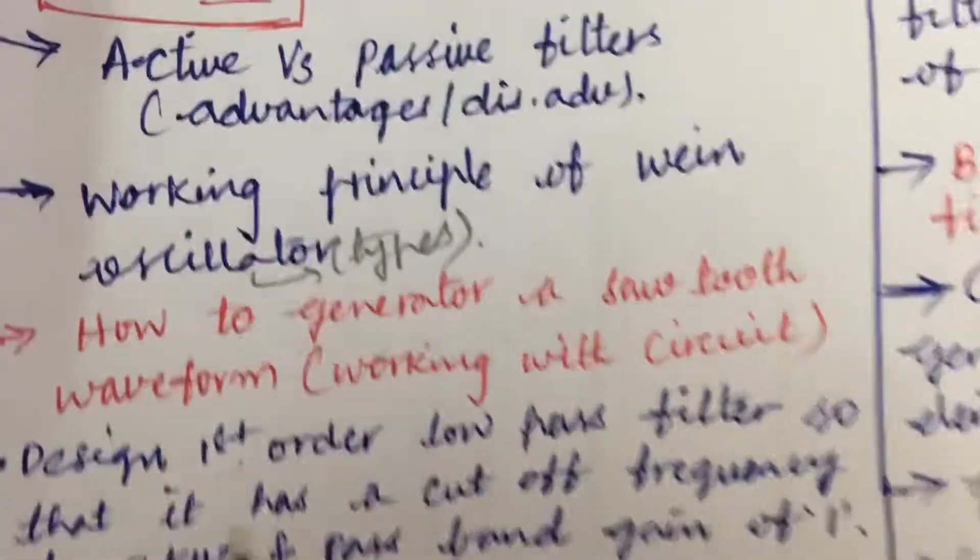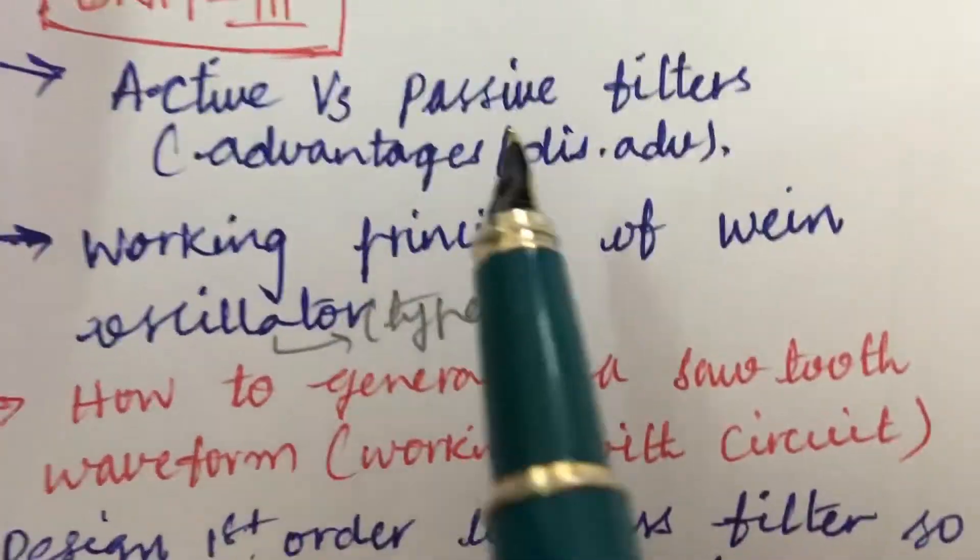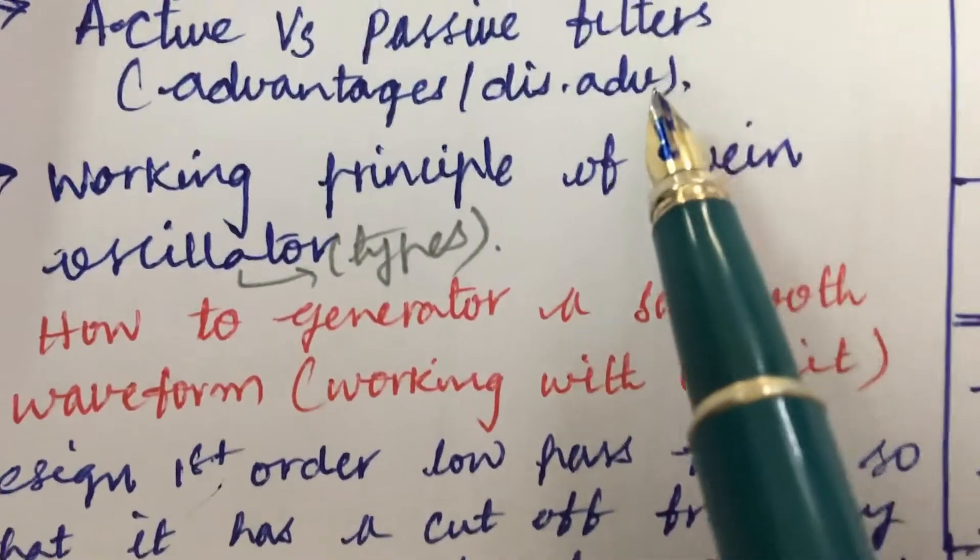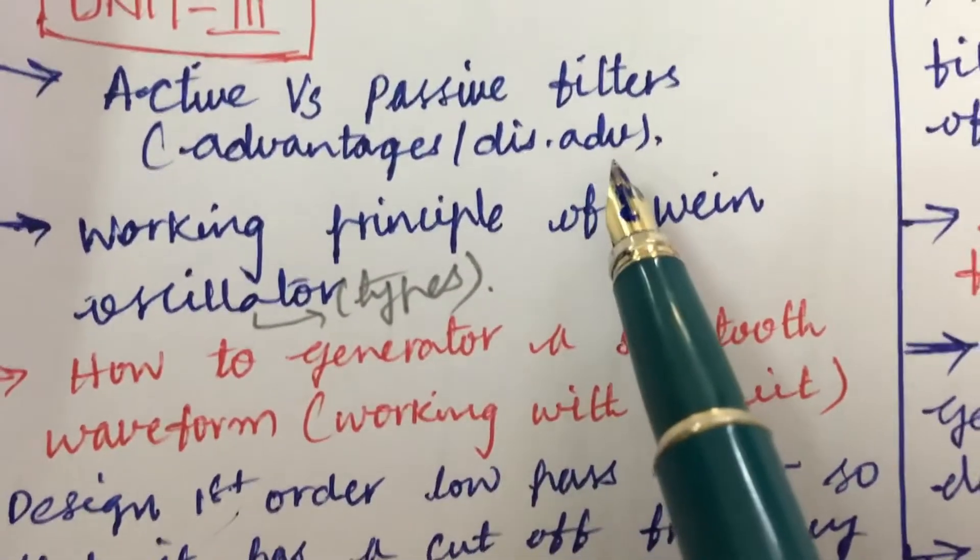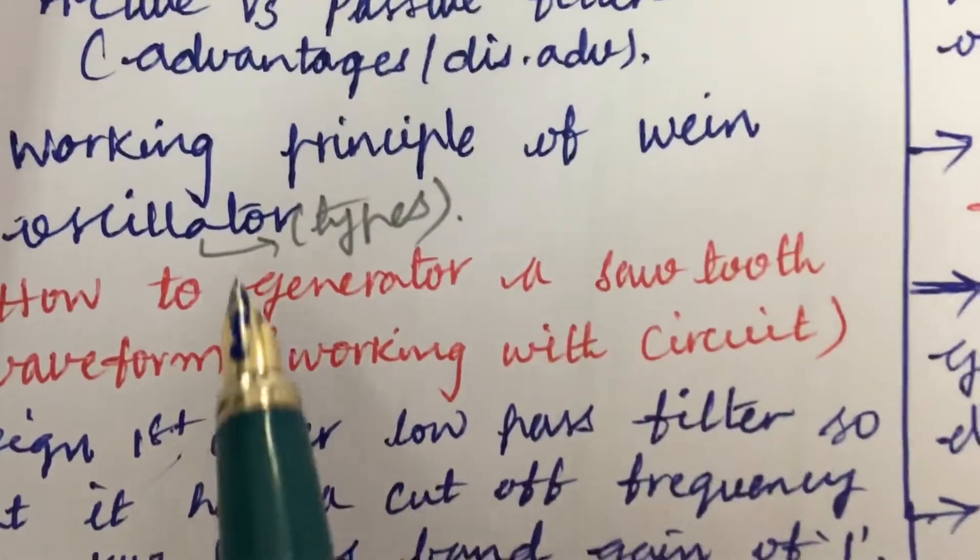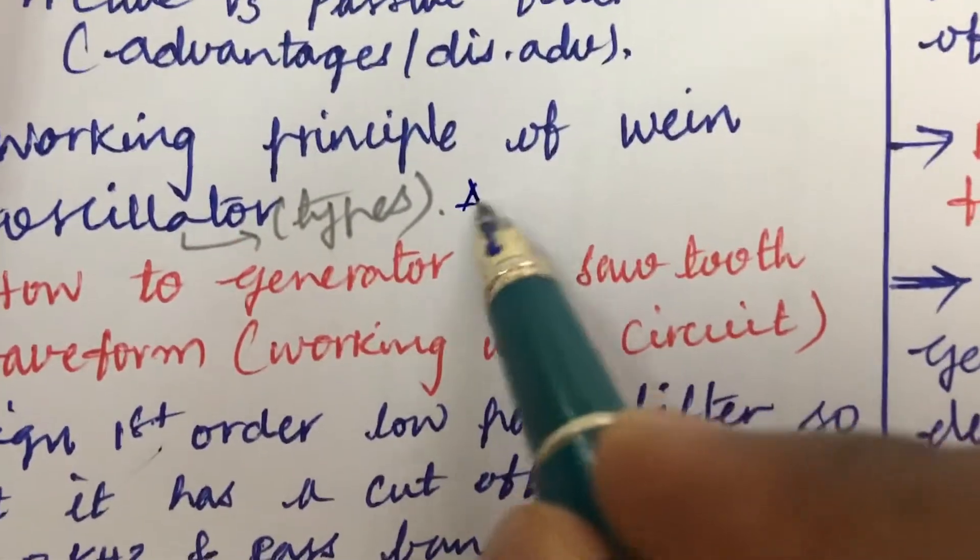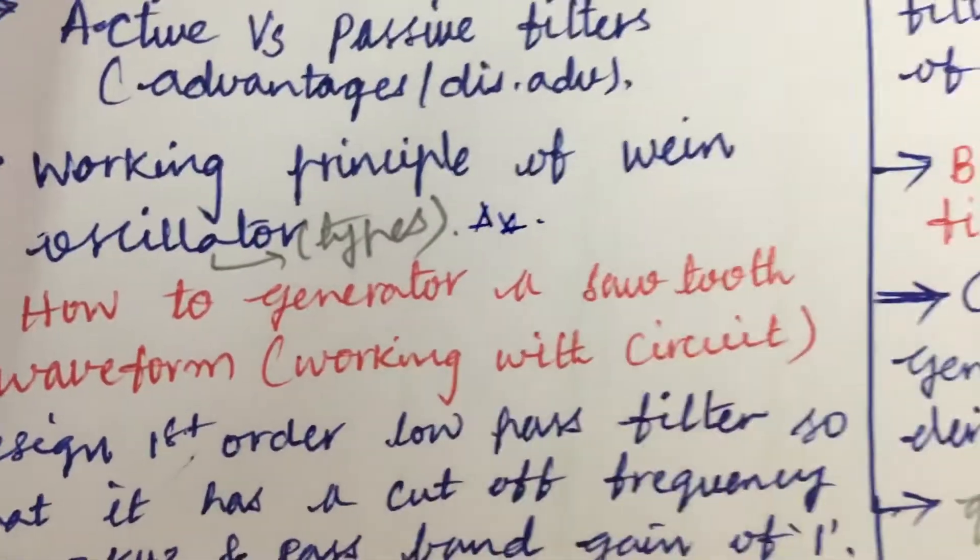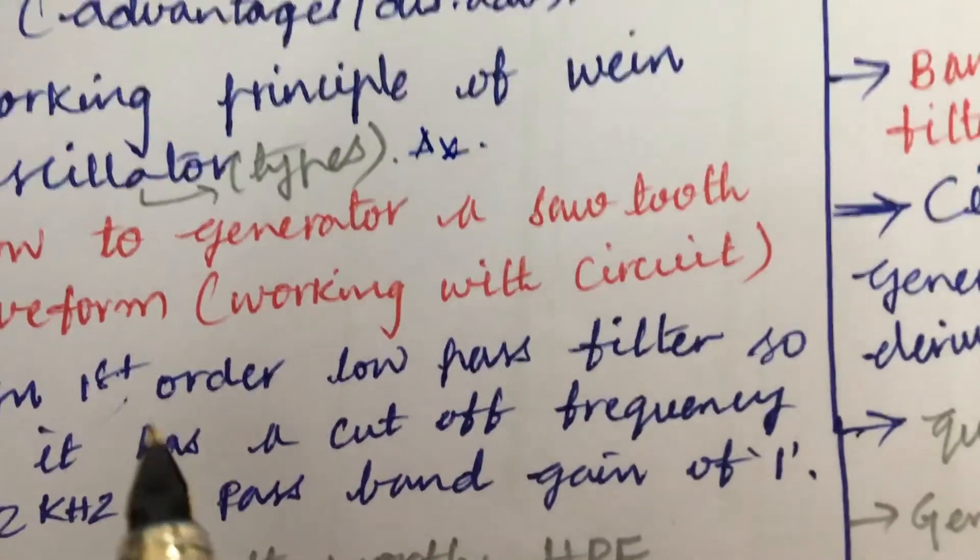Active versus passive filters differences as well as the advantages and disadvantages and the working principle of Wien oscillator and the types of oscillators is one of the very important and gunshot questions. As I am talking all about the third unit, from third unit also you are going to get two questions for sure.